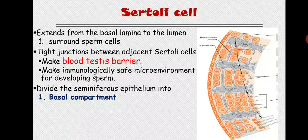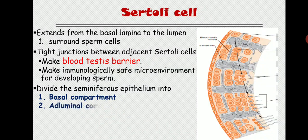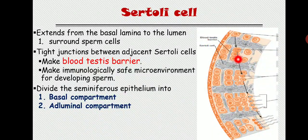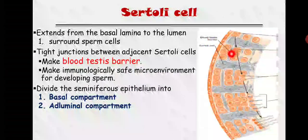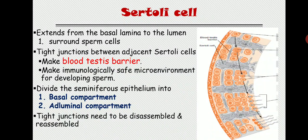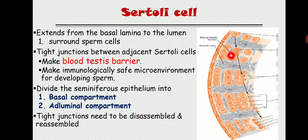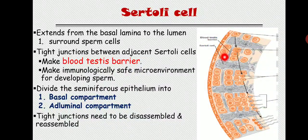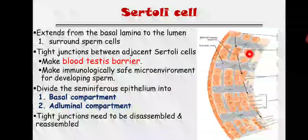The compartment of the seminiferous tubule situated toward the basal side is known as the basal compartment, and the compartment toward the lumen side is known as the adluminal compartment. To release spermatogonia inside the lumen, this blood-testis barrier has to break and then reassemble — the tight junctions need to be disassembled and reassembled. Inside the basal compartment there is spermatogonia, and in the adluminal compartment there are further developmental stages: primary spermatocyte and secondary spermatocyte.